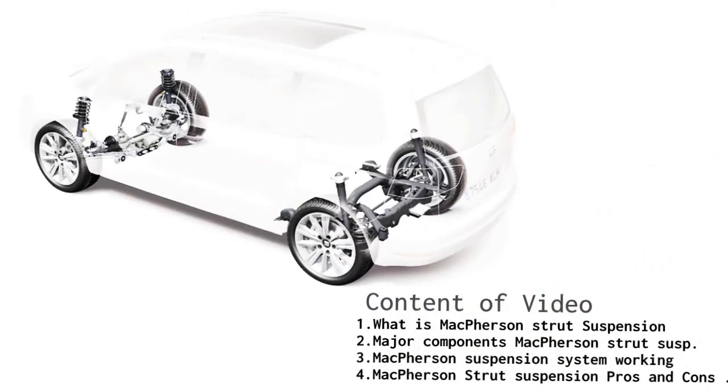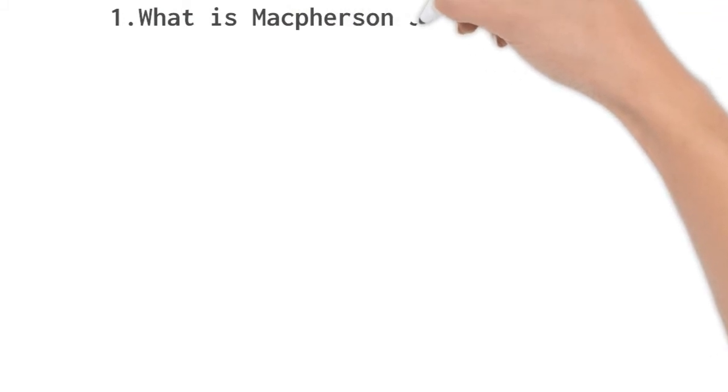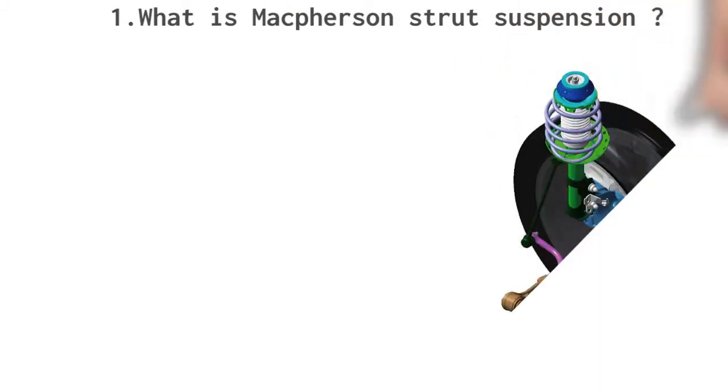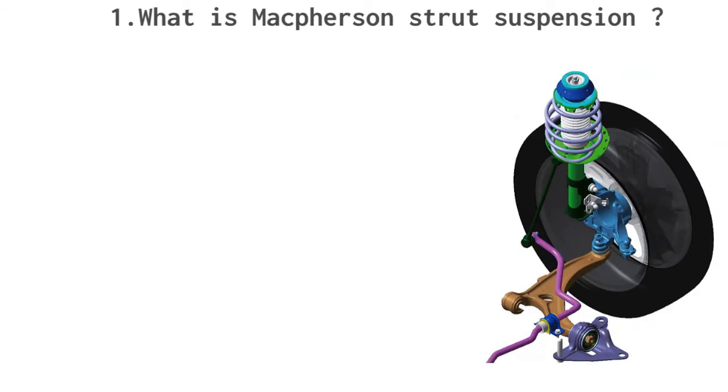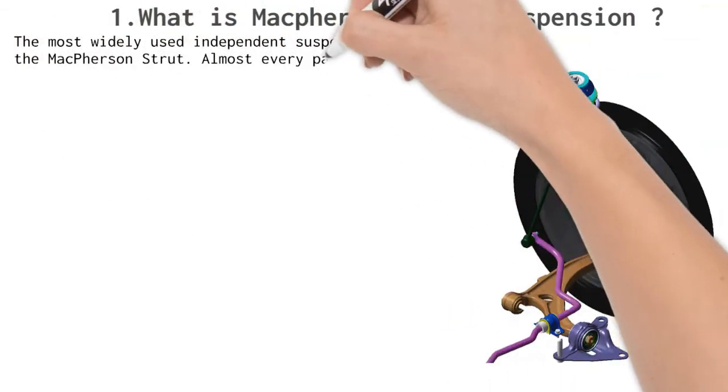MacPherson suspension system is the most widely used independent suspension system. Almost every passenger car today has this setup at the front end and simpler coil spring in the rear.